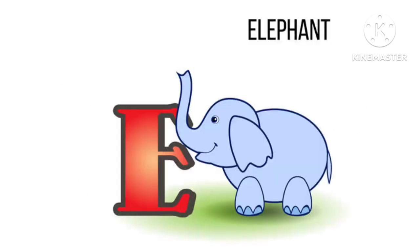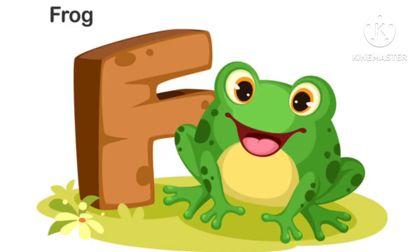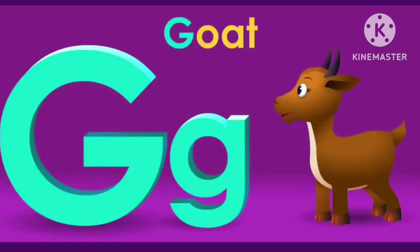E is for elephant, e-e-elephant. F is for frog, f-f-frog. G is for goat, g-g-goat.